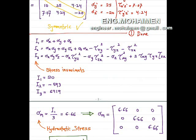There is something we need to focus on: if the question asks about only normal stress, then we don't need to include the shear stress — we take only the normal stresses as I1, I2, and I3. But if the question asks about stress without specifying normal or shear, then we need to include both. If the question asks about normal stress only, then we take the shear stresses as 0.